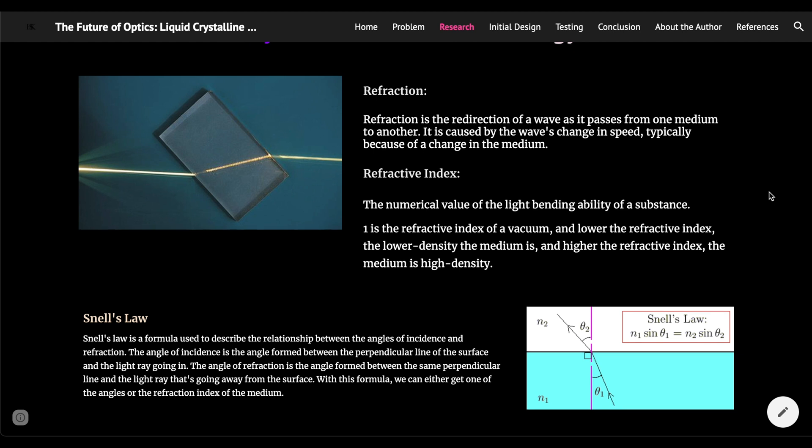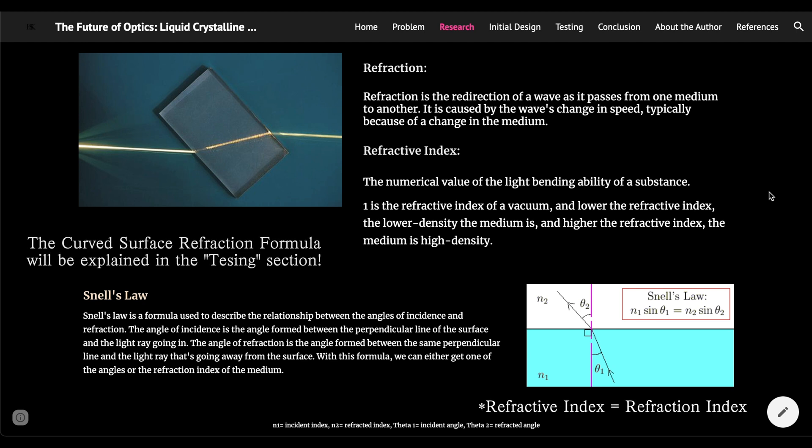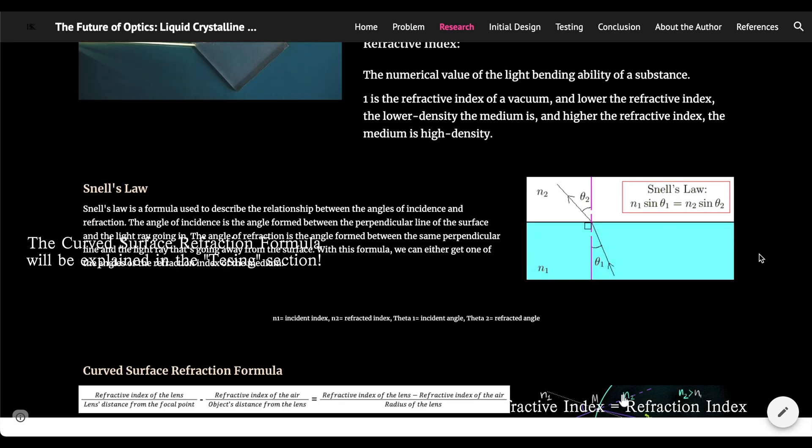The next equation to know is Snell's Law. Snell's Law is a formula used to describe the relationship between the angles of incident and refraction. The angle of incident is the angle formed between the perpendicular line of the surface and the light ray going in. The angle of refraction is the angle formed between the same perpendicular line and the light ray that's going away from the surface. With this formula, we can get either one of the angles or the refraction index of the medium. Personally, in this project, I used this formula to get the refraction index of the lens I created.